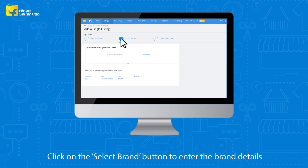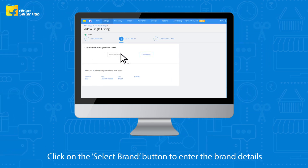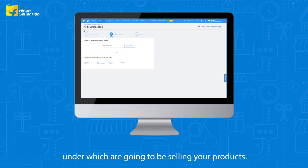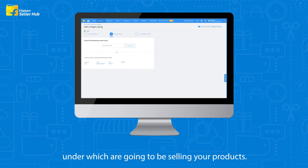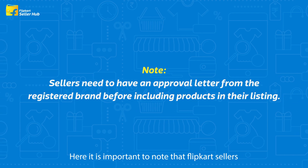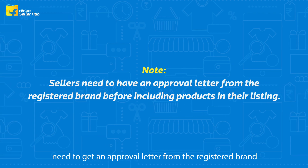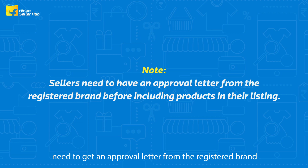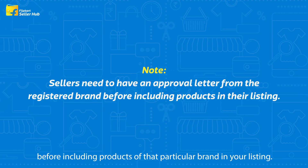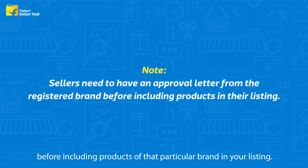Click on the select brand button to enter the brand details under which you are going to be selling your products. It is important to note that Flipkart sellers need to get an approval letter from the registered brand before including products of that particular brand in your listing.